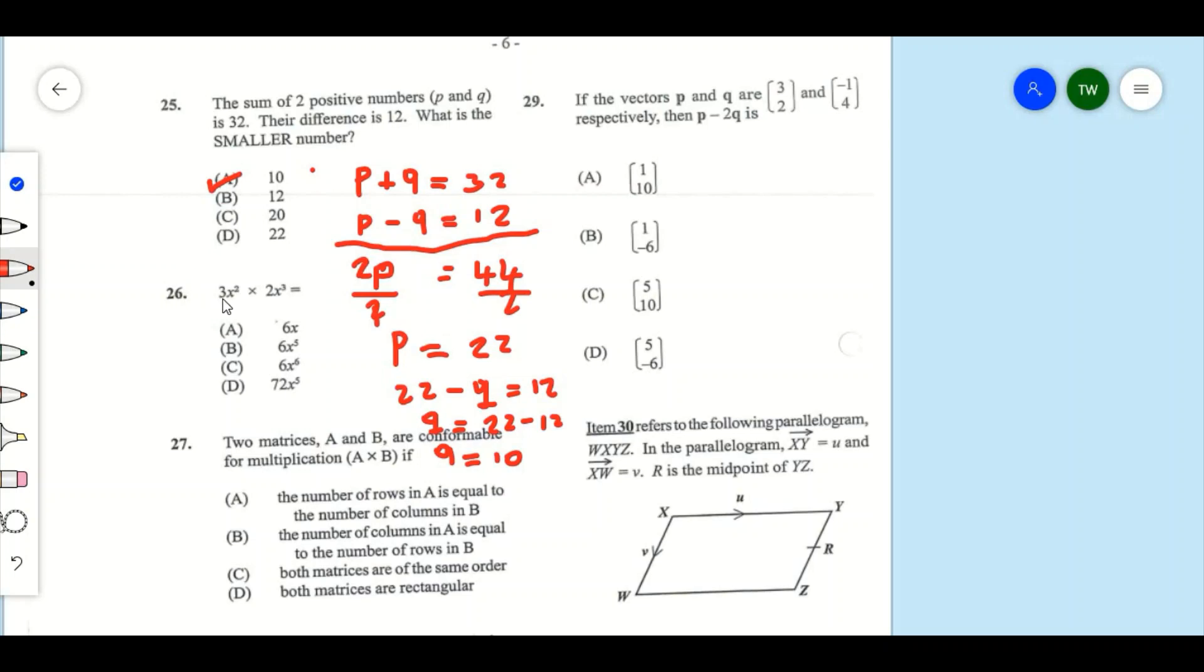Question 26: 3x squared times 2x cubed is going to equal. Now, this is the same thing as 3 times 2 times x raised to the 2 plus 3 power. So 3 times 2, that's going to give us 6, and 2 plus 3, that's going to give us 5. So it's going to give us 6x to the 5th power. And our answer for 26 is going to be B.